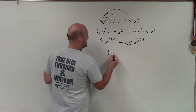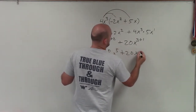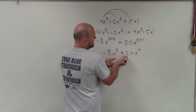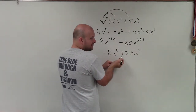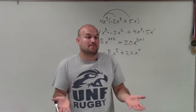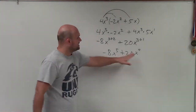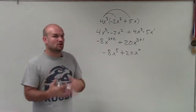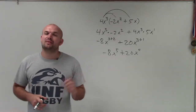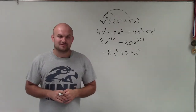Now I just simplify: negative 8x to the fifth plus 20x to the fourth. Since these are not the same, we can't add them together — they have to have exactly the same base and same power to combine by addition or subtraction. But they only need the same base when multiplying or dividing. So there you go, ladies and gentlemen — that is how you apply the distributive property to simplify our expression. Thanks.